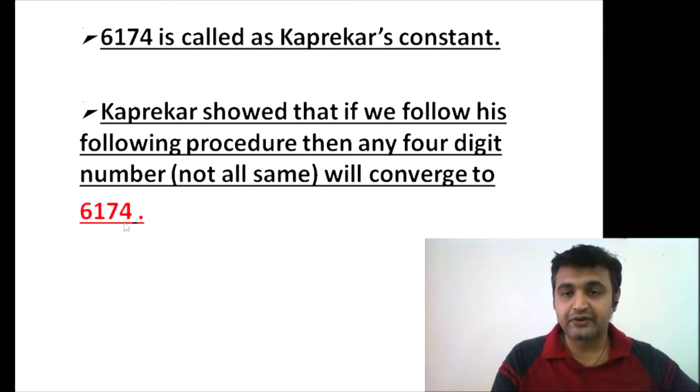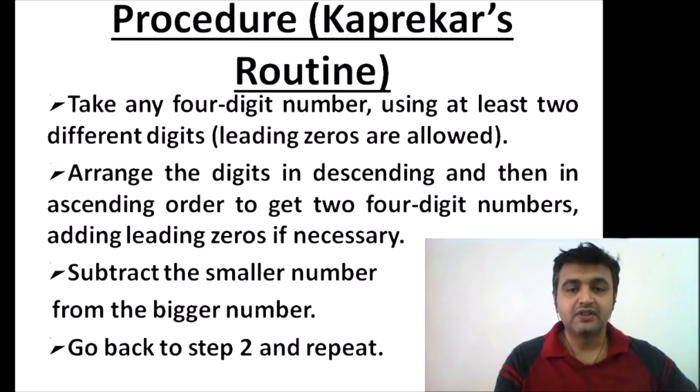What is Kaprekar's routine? You take any four-digit number as I said earlier, and all need not be the same. Leading zeros are allowed, meaning you can take 0025. Then arrange the digits in descending order and then in ascending order, and subtract.